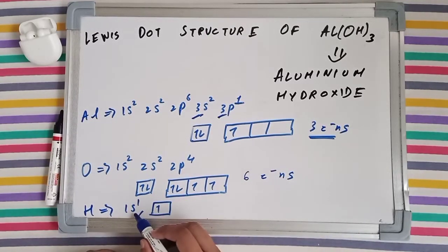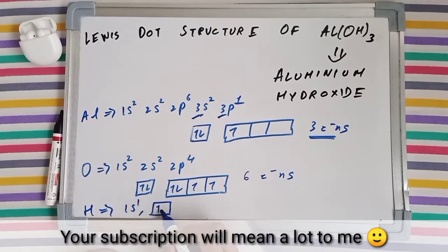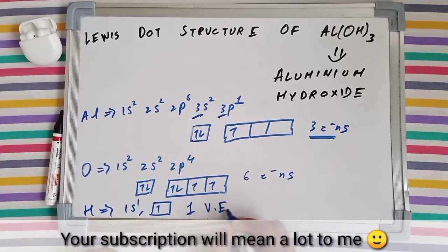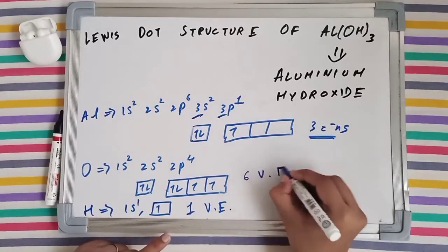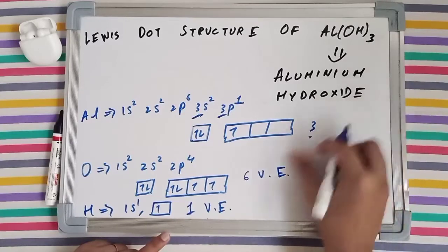Hydrogen's electronic configuration is simply 1s1, and its number of valence electrons is just a single valence electron. 1ve, 6ve, and 3ve.